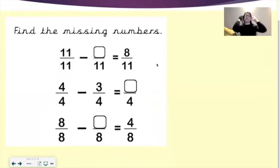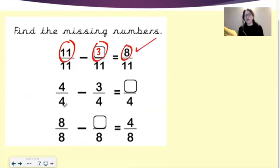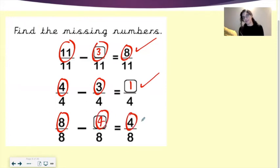Can you have a go at working these out for me? Find the missing numbers. 11 elevenths take away what elevenths would give you 8 elevenths? It would be 3 elevenths, because 11 take away 3 would give you 8. Next one, 4 fourths take away 3 fourths equals 1 fourth, because you take away the numerators, 4 and 3, to give you 1 over 4. Last one, 8 eighths take away what eighths would give you 4 over 8? It would be 4, because 8 take away 4 gives you 4 out of 8.